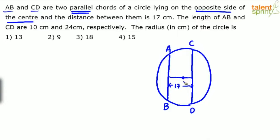Remember this is the center O. Now the length of AB and CD are 10 cm and 24 cm respectively. So AB is 10 cm and CD is 24 cm. Now from the center, if you draw a line joining A and similarly from the center draw a line joining C — these two lines are nothing but the radius of the circle. This is radius R and this also is radius R, because from the center to any point on the circumference equals the radius. So OA and OC are both the radius — OA equals OC equals R.